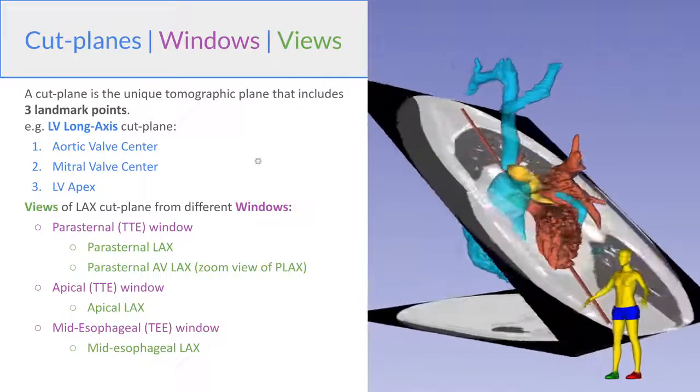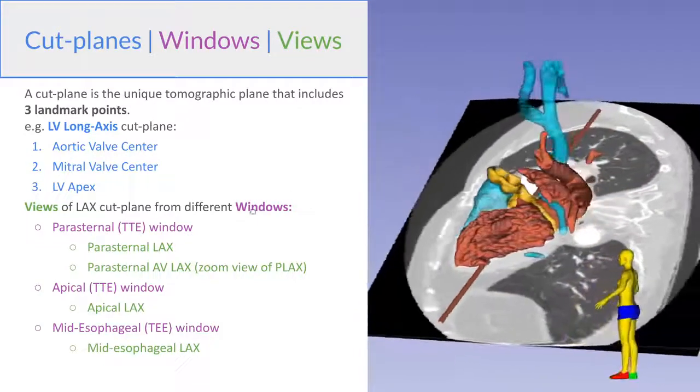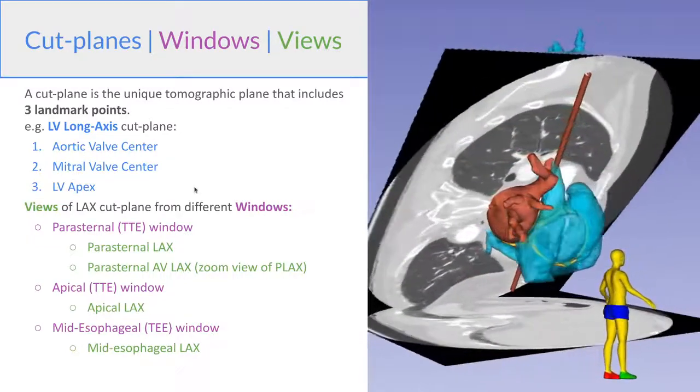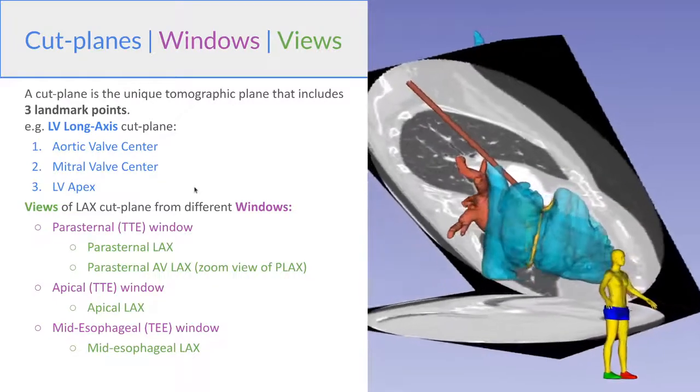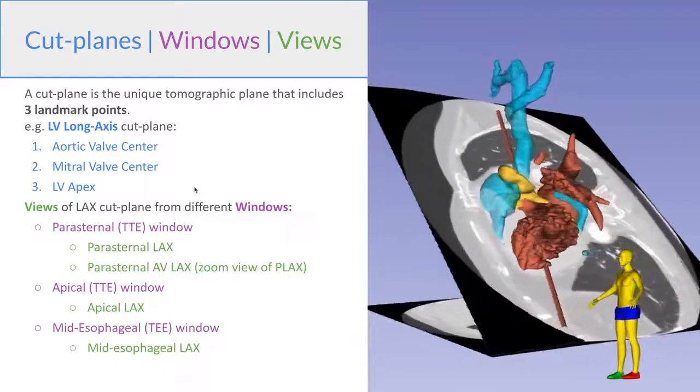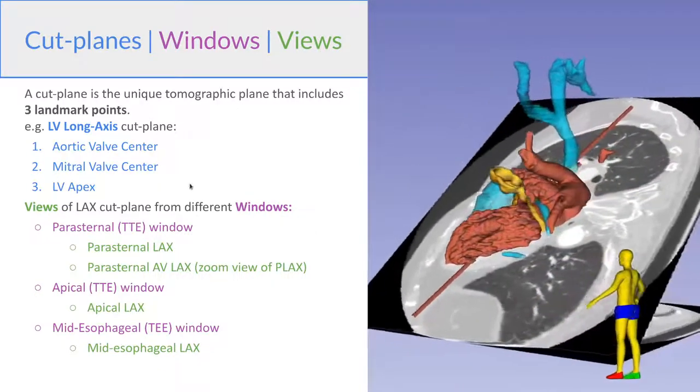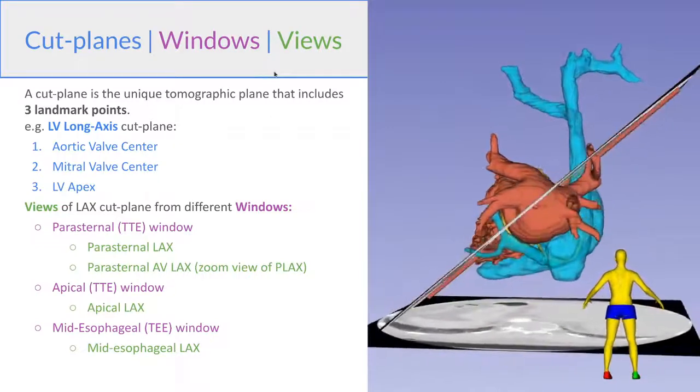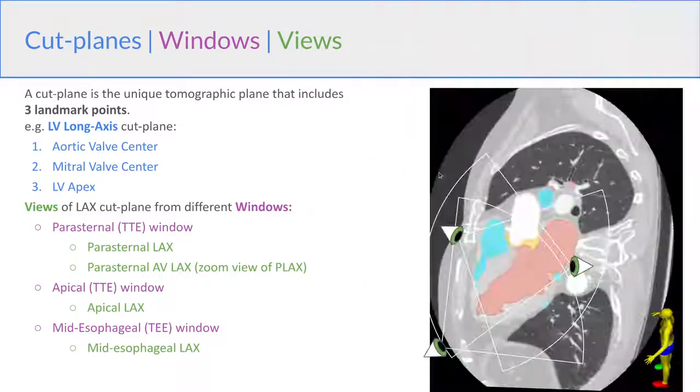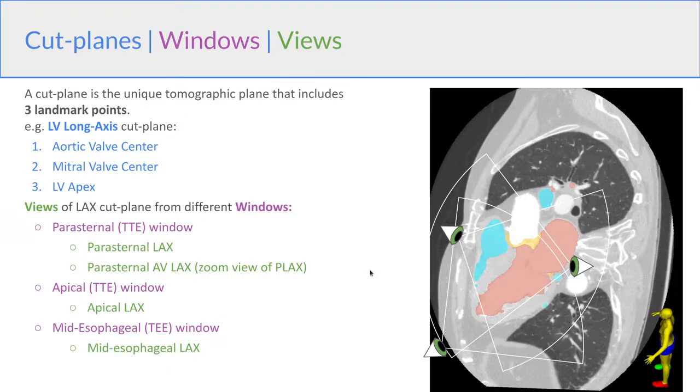So next we're going to look at the cut planes, windows, and views, and that's an important distinction. So the cut planes are tomographic planes that can be visualized based on three point landmarks. So for example, for the LV long axis cut plane, it includes the aortic valve center, the mitral valve center, and the apex. And there are multiple windows from which we can view parts of that cut plane. So in transthoracic echo, we can use the parasternal window or the apical window, and in TE, we can use the mid-esophageal window. And from each of these windows, we then have specific views that include part of that cut plane. So we have the parasternal long axis, for example, or the parasternal AV long axis, or the apical long axis, or the mid-esophageal long axis.